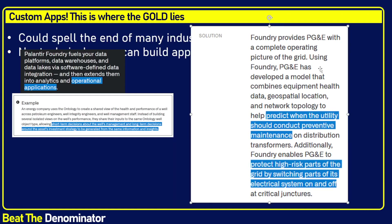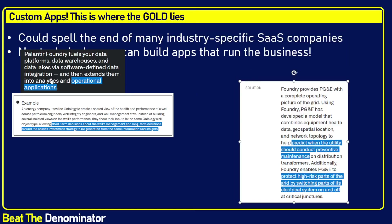Here's another one — PG&E. They've put a model on Ontology that includes equipment health data, geospatial location, and network topology. With this model, they not only predict when the utility should conduct preventive maintenance, but the model also enables them to protect parts of the business by switching parts of the electrical system on and off. So the software can prevent operational issues and extend asset life. Their website is filled with examples and good explanatory videos.